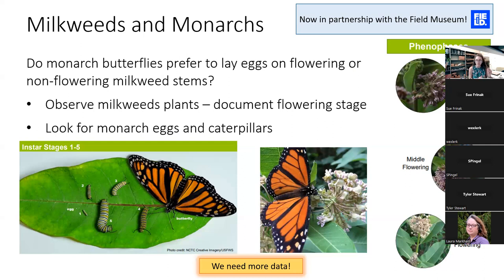Monarch eggs are about the size of the tip of a pencil. Caterpillars are larger and easier to spot. For Bud Burst, you only need to differentiate caterpillars in their smallest stage — labeled number one — versus anything larger. There is an advanced participation level where you distinguish between all five different caterpillar sizes, called instars, which are different growth phases.